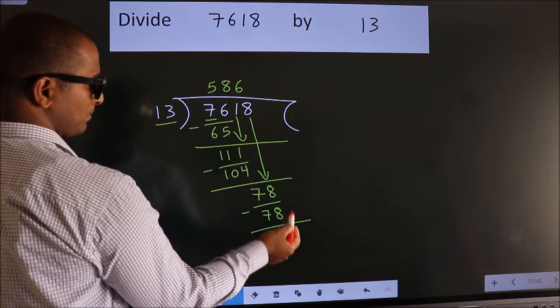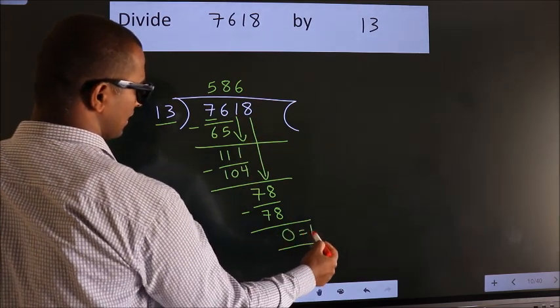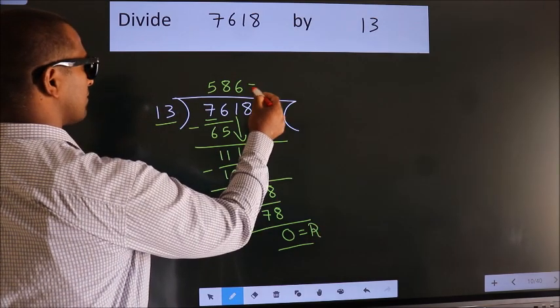No more numbers to bring it down. So we stop here. This is our remainder. This is our quotient.